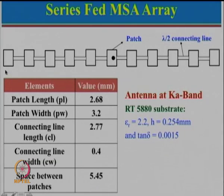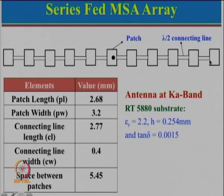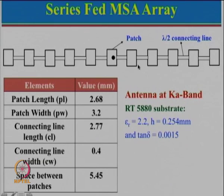Let us start with an example of a series feed microstrip antenna array. Here we have a number of patches — counting: 1, 2, 3, 4, 5 on the right, a central element, and 5 elements on the left side, for a total of 11 elements. This configuration uses an odd number of elements so that with respect to the feed it has left-hand and right-hand symmetry.